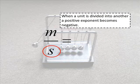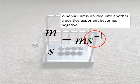When s, the unit for seconds, is divided into m here, it gets the exponent negative 1, and we end up with the unit of meters per second, or ms negative 1.